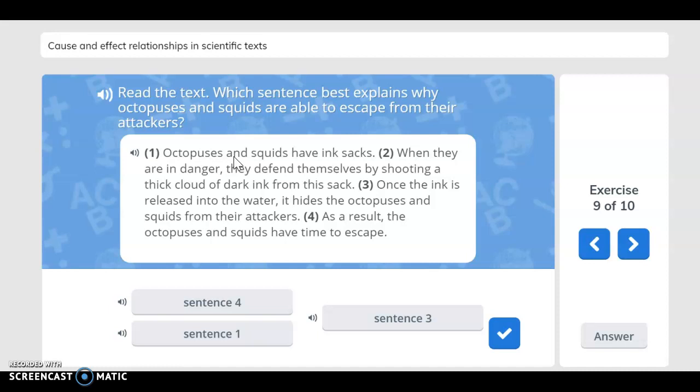Three, once the ink is released into the water, it hides the octopuses and squids from their attackers. Four, as a result, the octopuses and squids have time to escape. So it says, which sentence best explains why octopuses and squids are able to escape from their attackers? You said sentence three, you are correct.